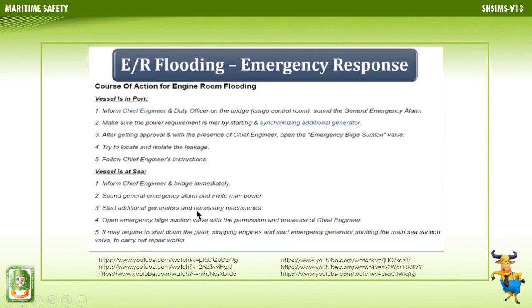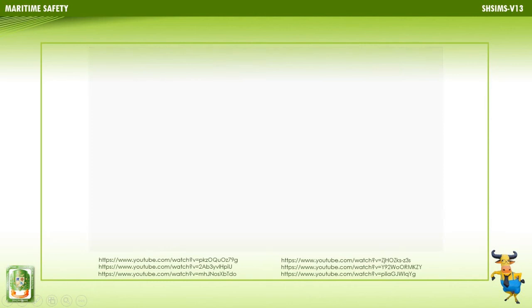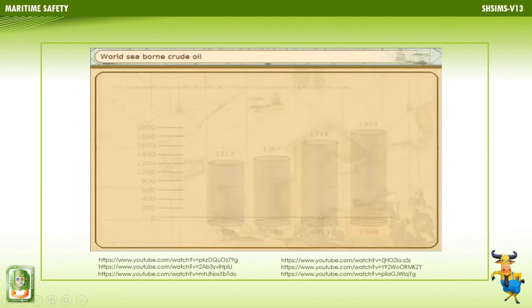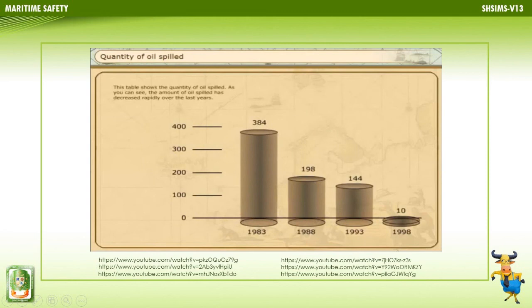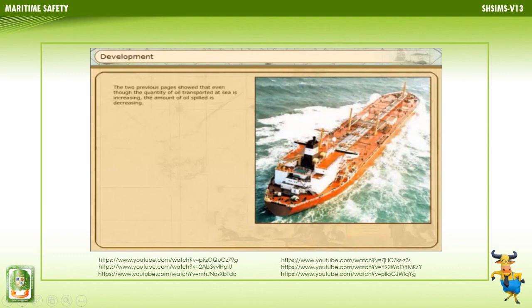This is an example of the damage an oil spill can cause. The table shows the quantity of crude oil in millions of tons transported at sea, which increases each year. However, the amount of oil spilled has decreased rapidly in recent years. Even though the quantity of oil transported at sea is increasing, the amount of oil spilled is decreasing.